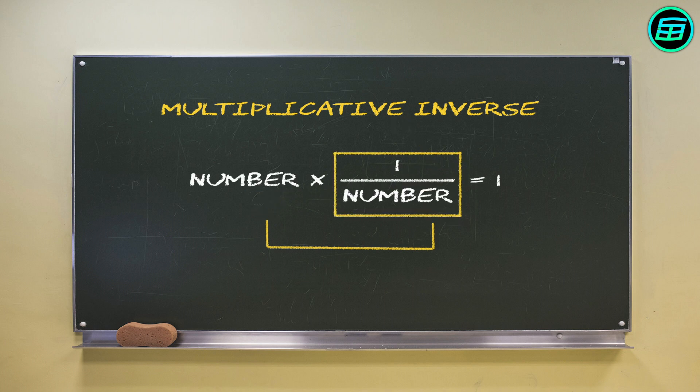One over a number is called the multiplicative inverse. And multiplying a number by its multiplicative inverse always returns 1. For example, 5 times 1 over 5 equals 1.